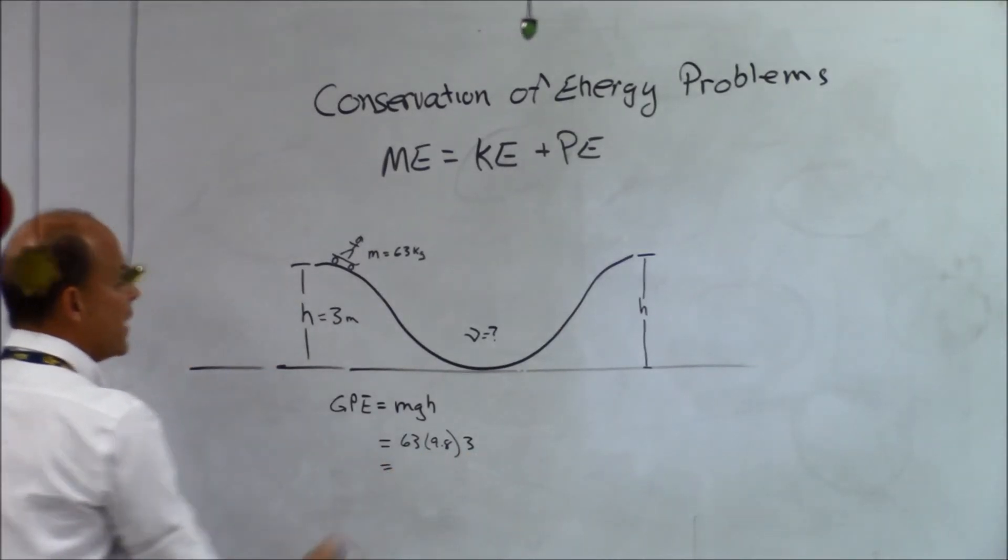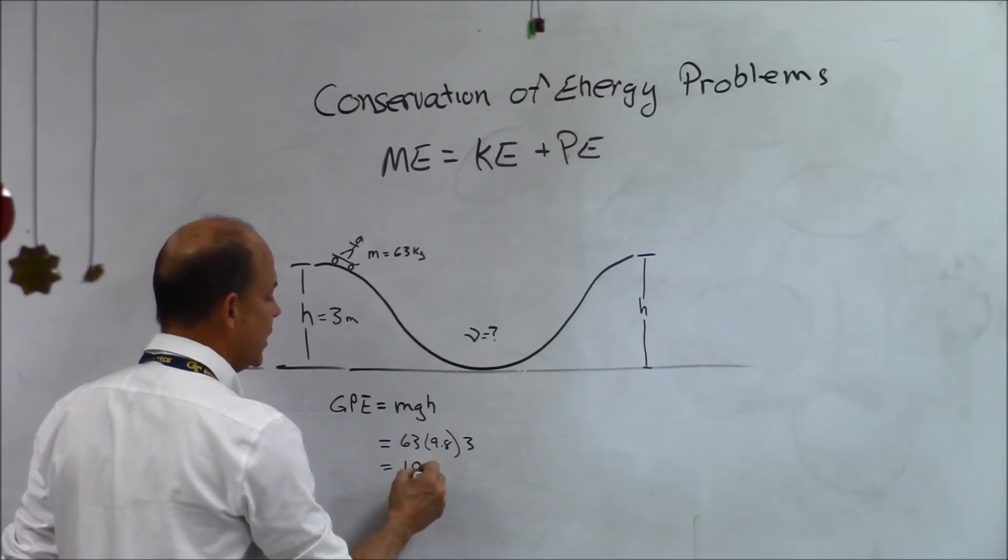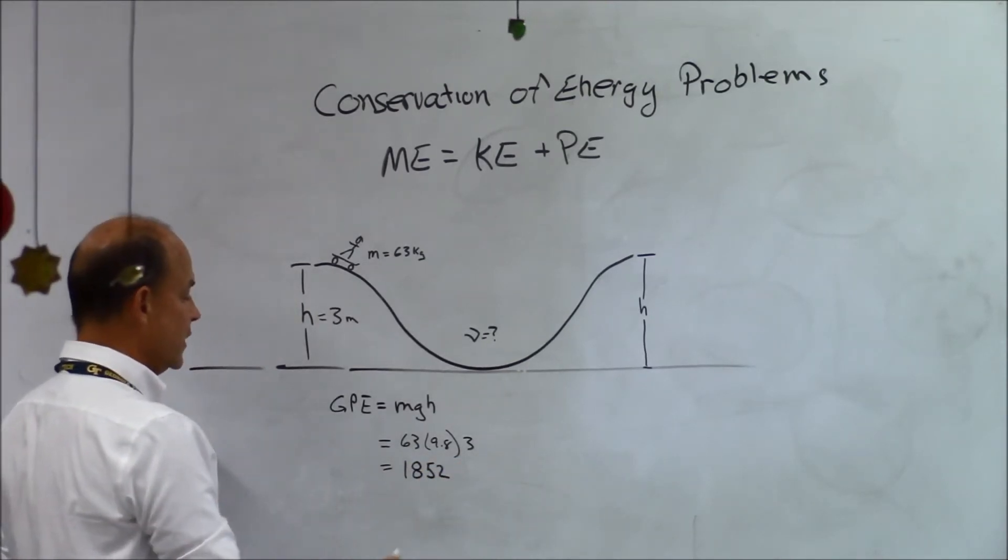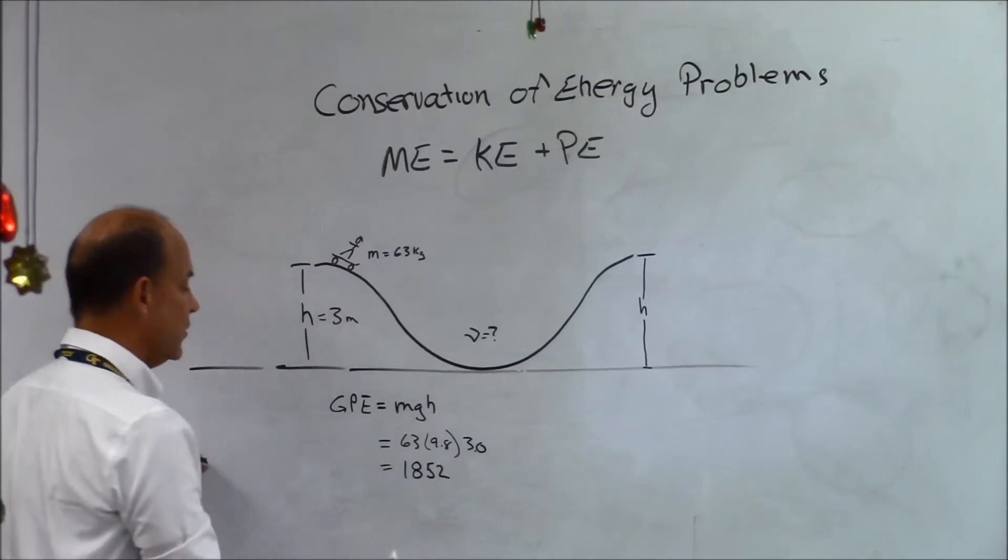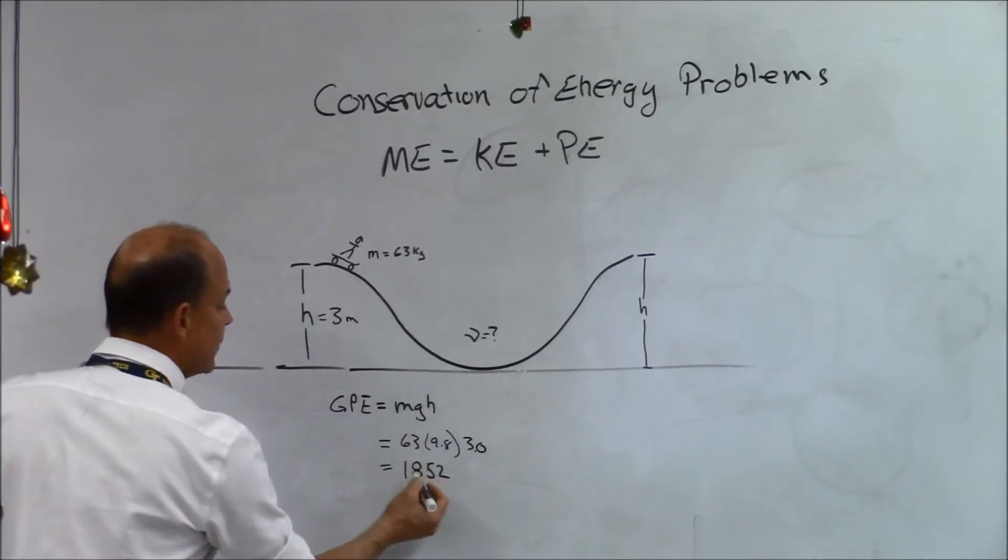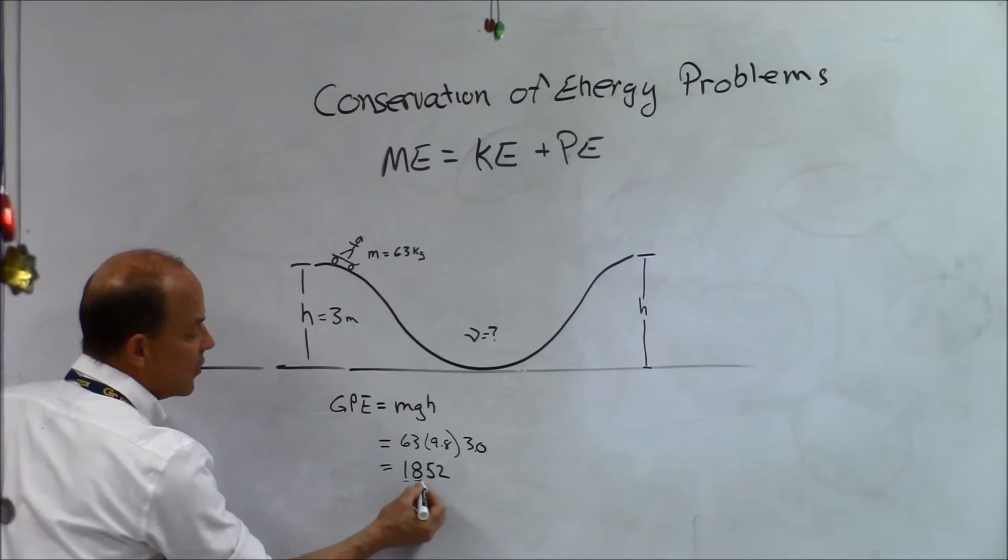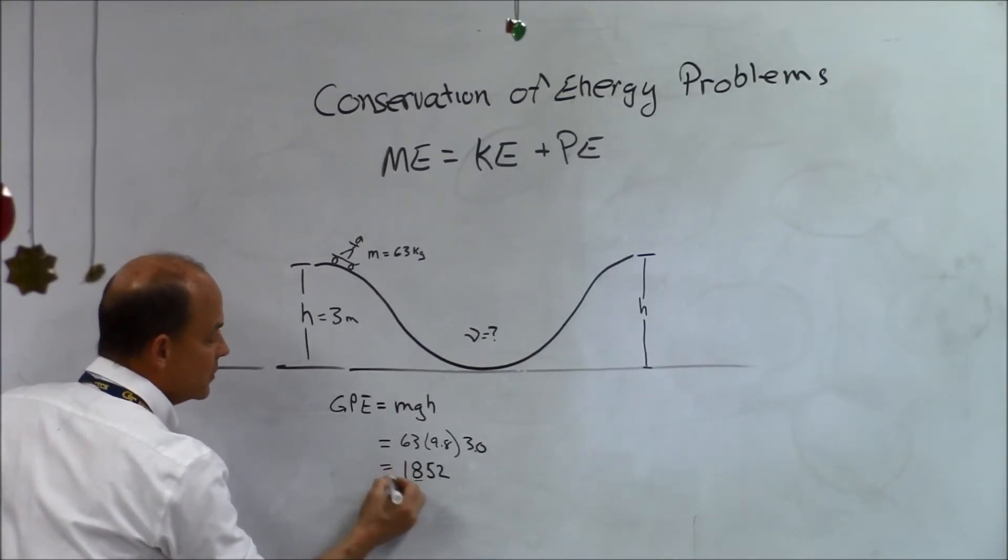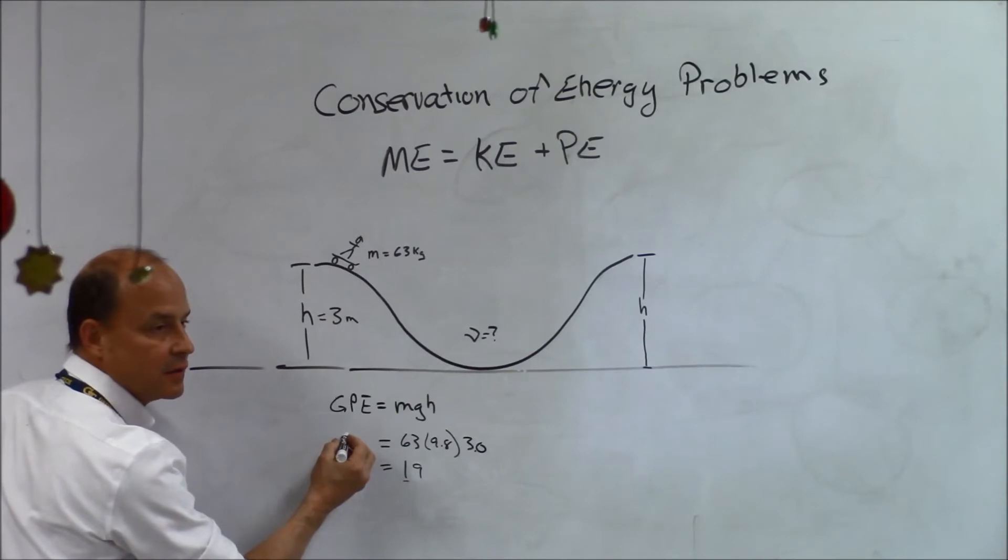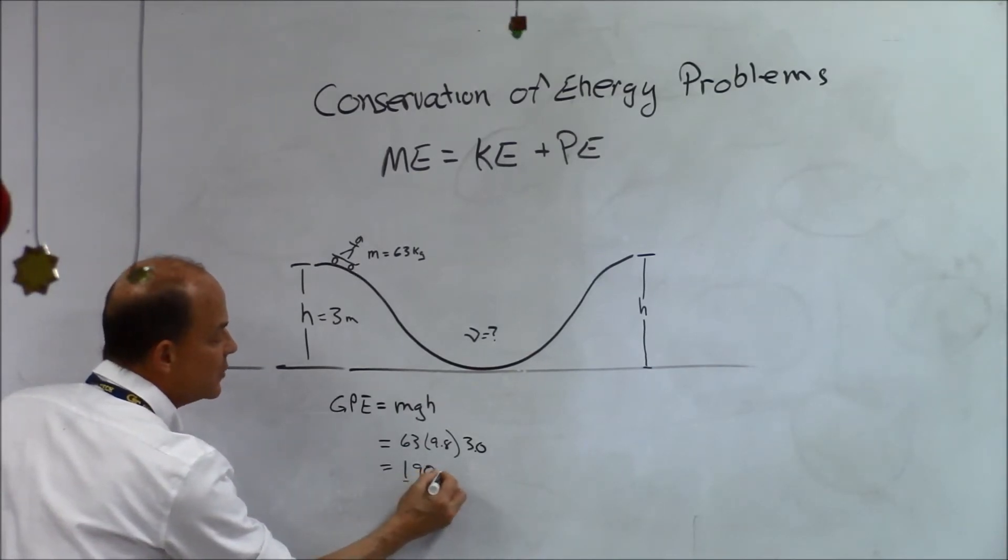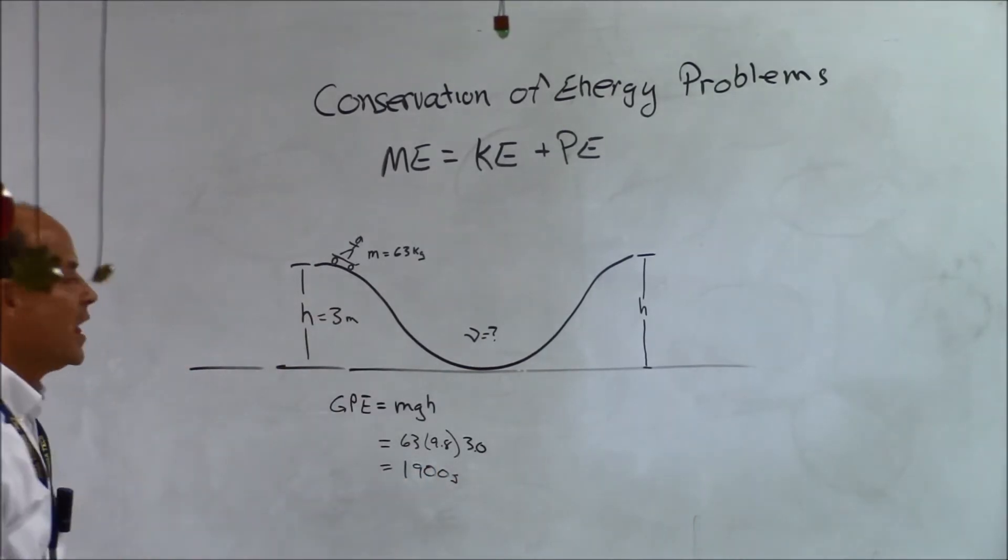So MGH is equal to 63 times 9.8 times 3. Can someone find out how many joules our skater has? 1,852. Let's leave it at two sig figs. I'm going to call this 3.0 meters. So 1,852, is that proper number of sig figs? No, we have to write this with just two sig figs. That is either going to stay at 8 or going to go up to a 9. We're going to make that a 9. And what are the units? Joules. All right. So 1,900 joules. That's how much energy he starts out with.